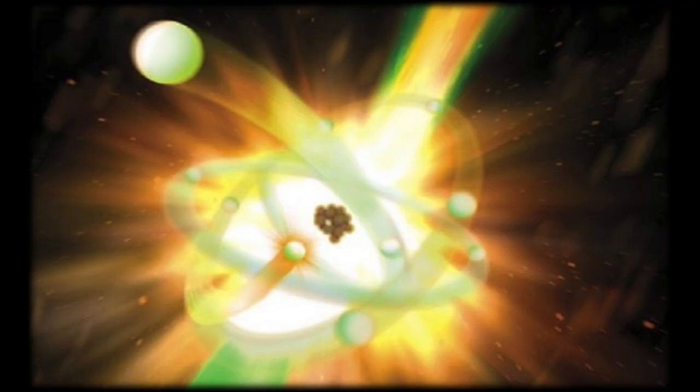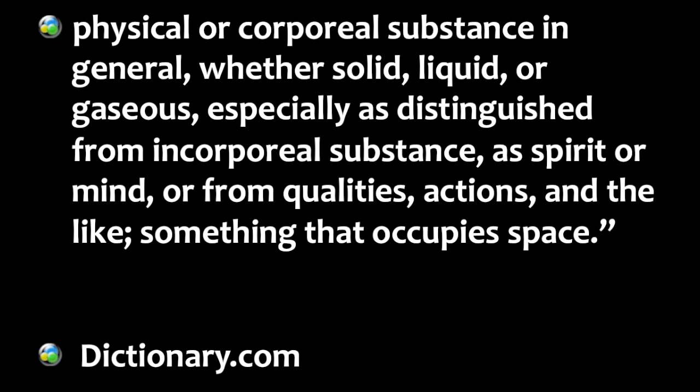Before we can understand light, we first need to understand the basic ingredients of matter. Light is manufactured at the subatomic level so it would benefit us greatly to understand how atoms work. Matter, which is made up of atoms, is defined as physical or corporeal substance in general, whether solid, liquid, or gaseous, especially as distinguished from incorporeal substance, as spirit or mind, or from qualities, actions, and the like, something that occupies space.